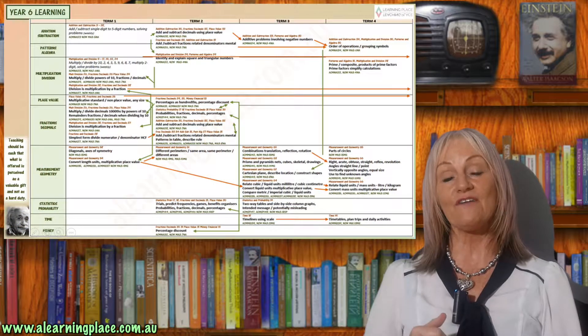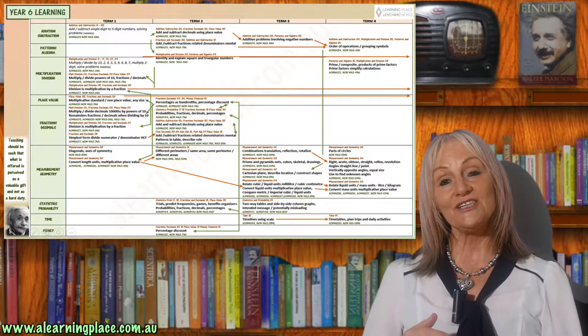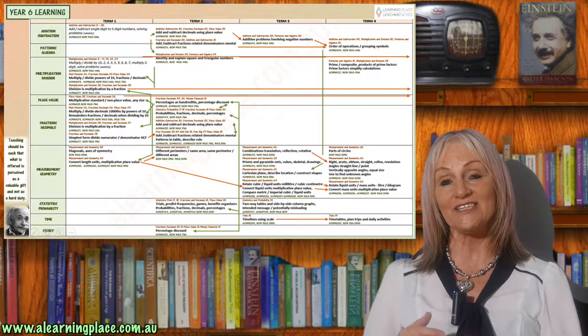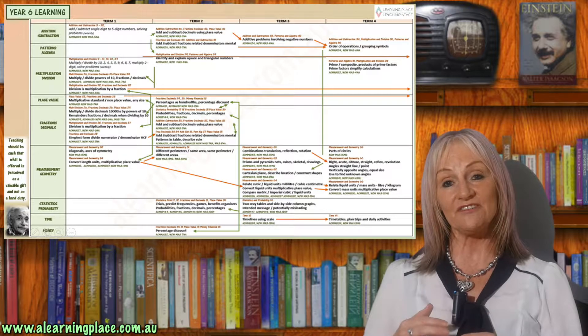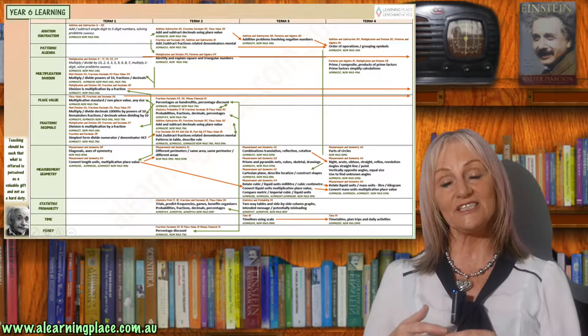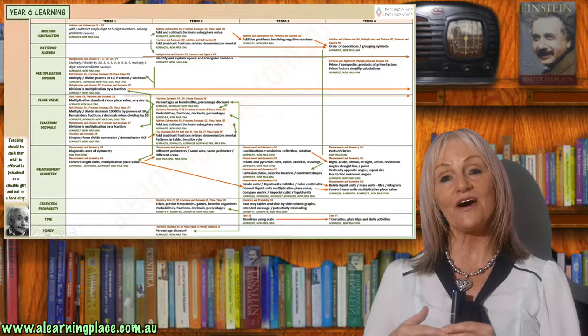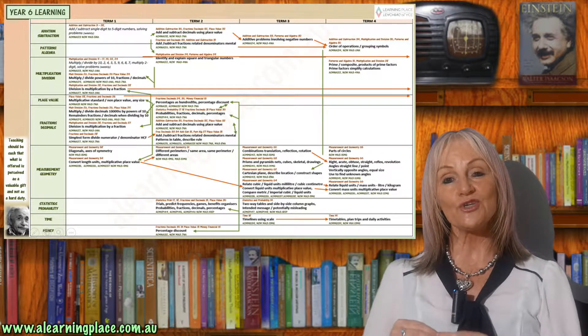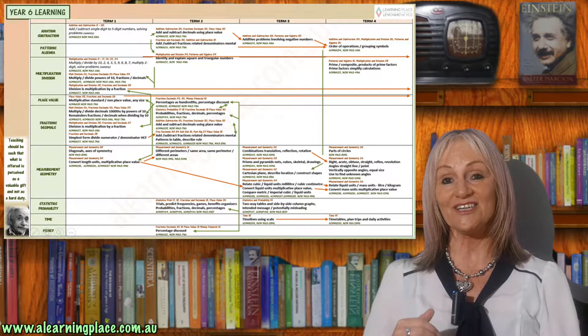Greetings fellow mathematicians. Let's talk about the mathematics that children will learn in year six. In year six, children will continue to investigate addition and subtraction of up to five digit numbers using place value. They will also continue to investigate multiplication and division using the distributive property for division, relating division to fractions of single digit numbers and multiplying by two digit numbers. They will also solve problems involving addition, subtraction, multiplication and division.